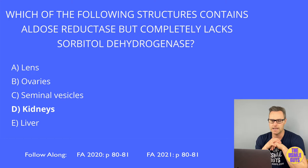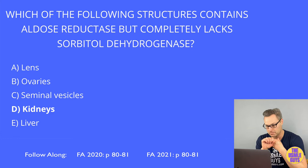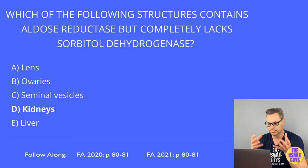Symptoms to look out for in a vignette include hypoglycemia and vomiting. More severe findings like jaundice and cirrhosis may also be seen. To manage this, we need to decrease fructose intake and avoid anything that can be converted into fructose, like sorbitol, or anything that contains fructose, such as sucrose.